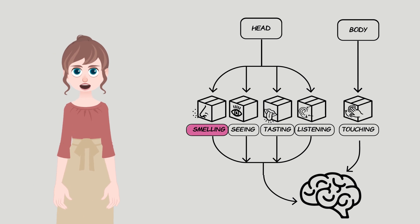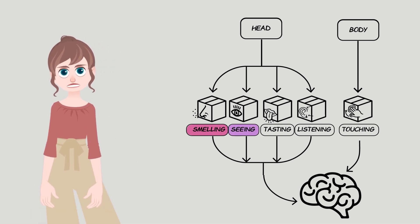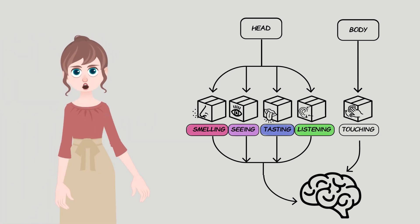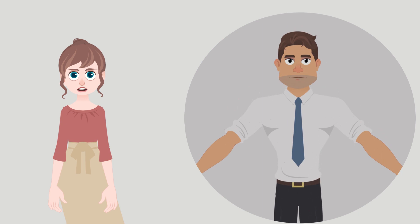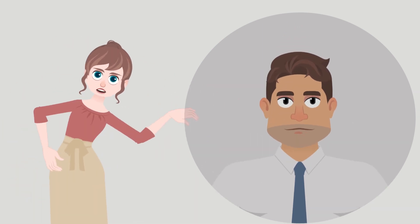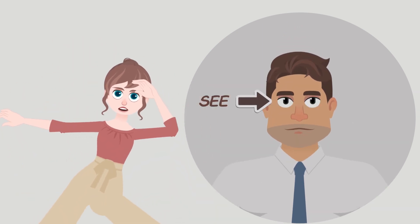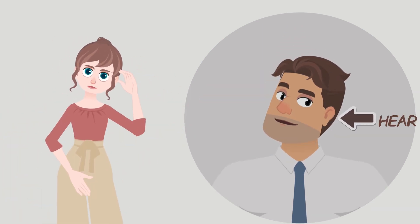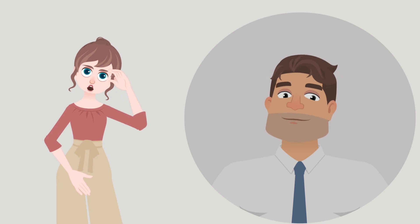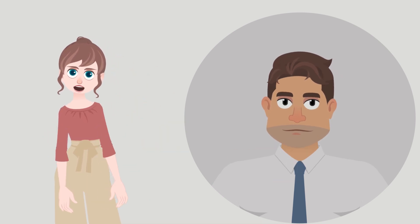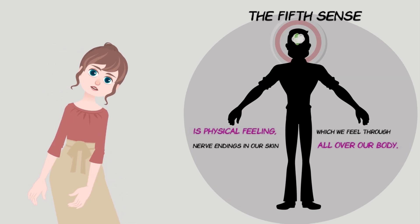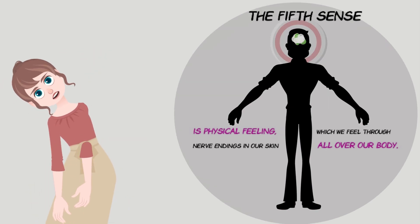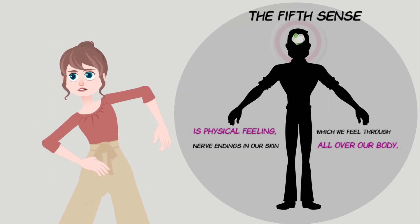Input means that we have five senses that put information into our brain from our environment. Four senses are located on our head: seeing (the visual), hearing (the auditory), smelling, and tasting. The fifth sense is physical feeling, which we feel through nerve endings in our skin all over our body.